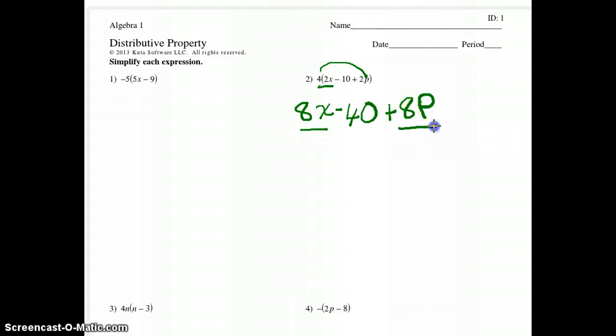Can we combine the 8x and the 8p? We'll talk about that more in our next lesson, but think about it. This is 8 apples, and this is 8 pears. Do we have 16 apple pears? No, so those aren't going to be able to be combined.